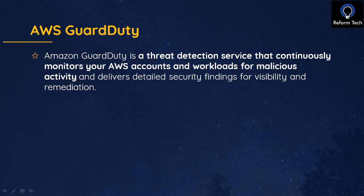GuardDuty uses intelligence feeds — like malicious IP addresses and domains — and machine learning to identify unexpected and potentially unauthorized activity in your AWS account. This includes unusual API calls or instances deployed in regions that have never been used before. All these can be tracked with GuardDuty.